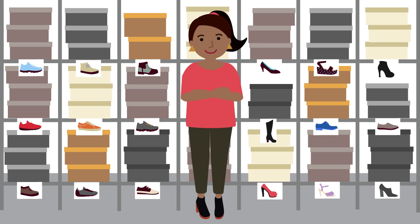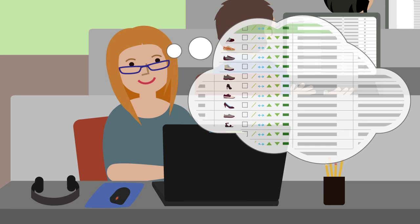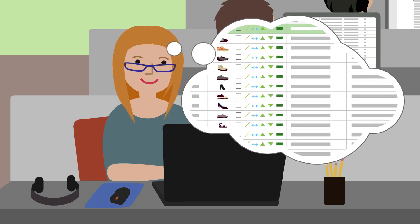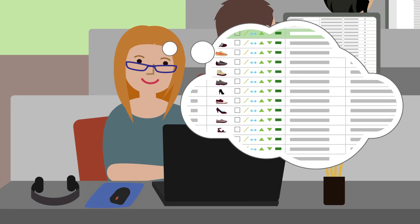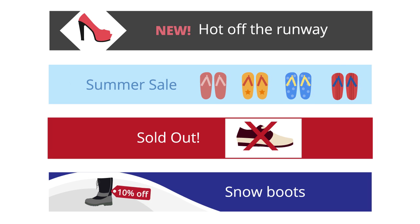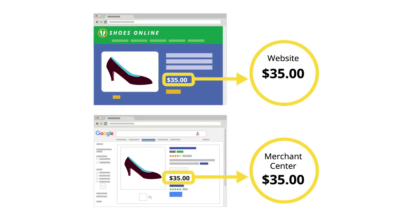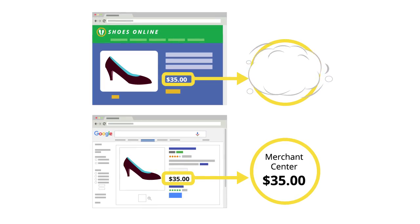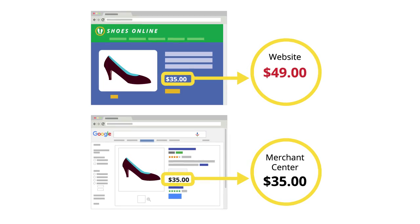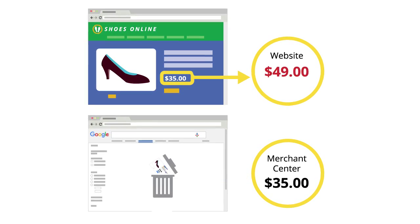Mary decides the Content API is the best option for her, and tells her developer to set it up and submit the product data. Now they just need to make sure they keep the data up to date. If product info changes on her website and isn't updated in Merchant Center, her ads will stop running.